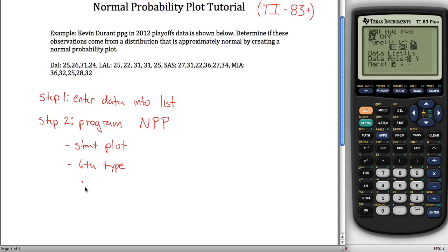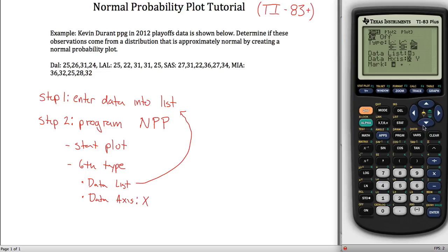Under the sixth type, we want our data list to be wherever you put your data. And your data axis, what it's asking here is which axis, your X axis or your Y axis, should I plot the actual values on, and we want to use the X. My data is in L1, so I'll hit second and then 1 to get L1 to pop up, and then X axis mark, you can use whatever you want, that's just how it's going to show up on your normal probability plot.